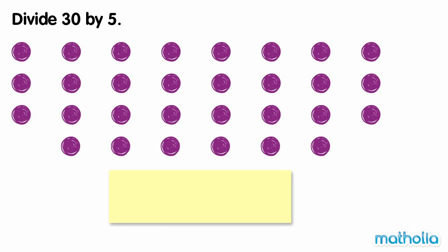Divide thirty by five. There are thirty dots. To divide by five, we can circle groups of five dots and then count the total number of groups.